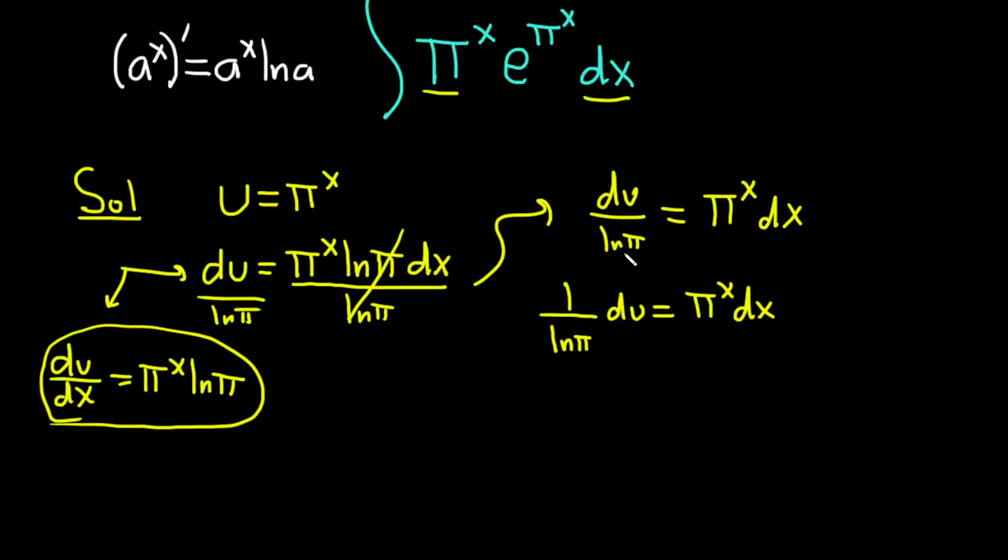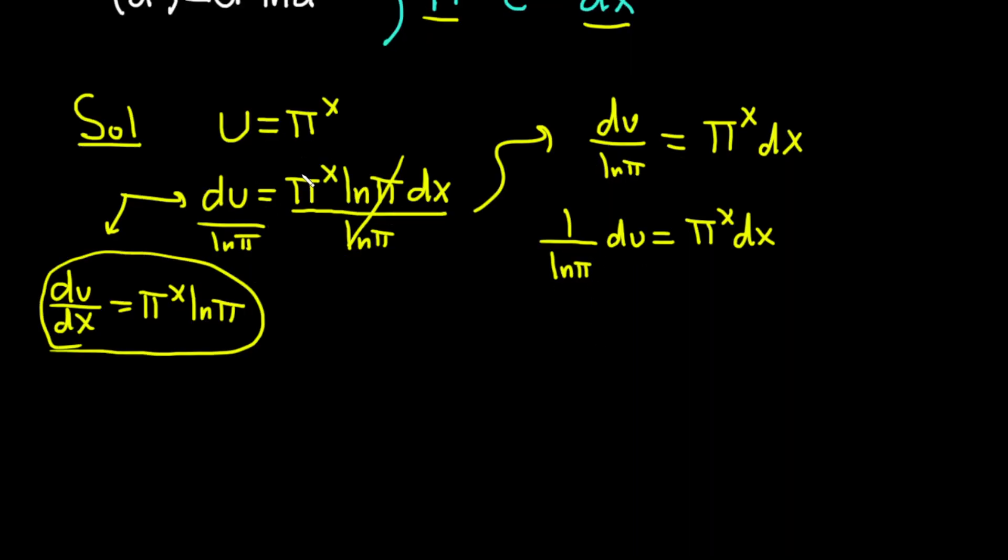I'm going to go ahead and write down the original problem one more time. So our integral was the integral of π to the x and it was e to the π to the x dx. Okay, this is going to be equal to, so we're going to replace π to the x dx with 1 over ln π du. So this that I'm underlining here is going to become this. I'm going to pull out that 1 over ln π constant. And then here we just have the du.